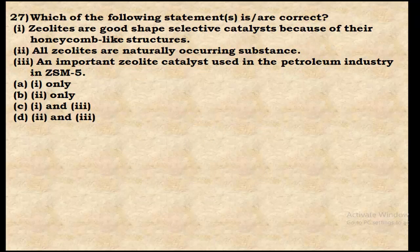Question 27: Which statements about zeolites are correct? Statement 1 — zeolites are good shape-selective catalysts because of their honeycomb-like structures — is correct. Statement 2 — all zeolites are naturally occurring — is wrong, as some are artificially prepared. Statement 3 — ZSM-5 is an important zeolite catalyst used in the petroleum industry — is correct. Option C (statements 1 and 3) is the right answer.